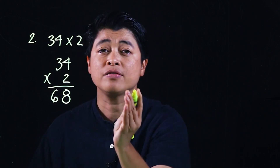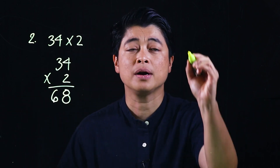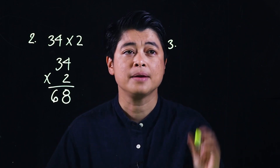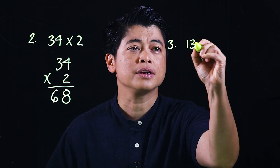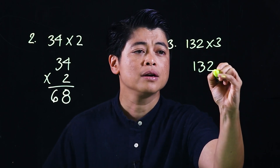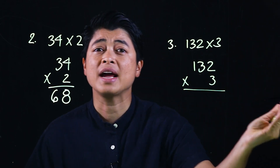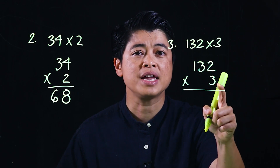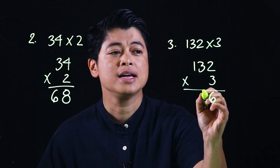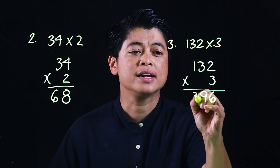The second problem says multiply 132 by 3. Again, if we put it in computational form, we multiply from the right to the left: 3 times 2 is 6, 3 times 3 is 9, and 3 times 1 is 3.